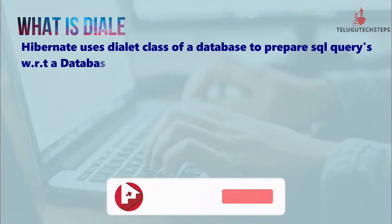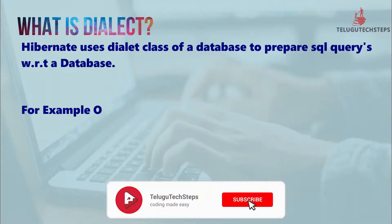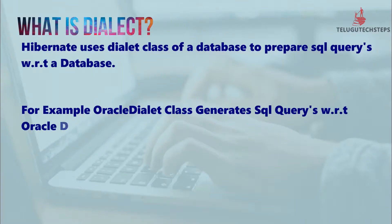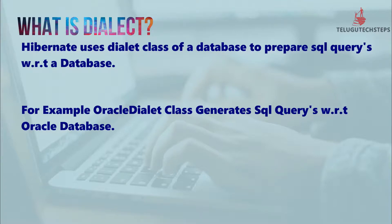Hibernate uses the dialect class of the database to prepare SQL queries with respect to that database. We specify which type of database we are using, and Hibernate prepares SQL queries accordingly. For example, if you use Oracle dialect, SQL queries are generated with respect to the Oracle database.